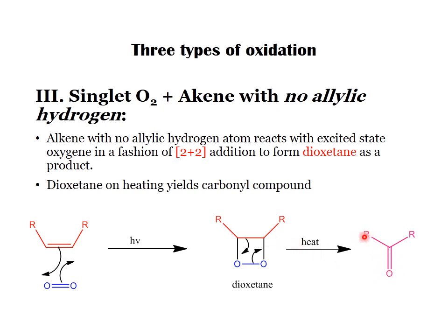Note that in the dioxetane product, one of the R substituents on the alkene may be hydrogen, and either R group can be considered when identifying the carbonyl products formed.